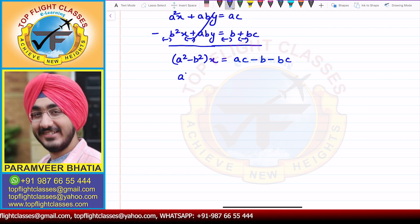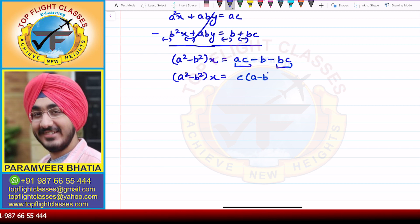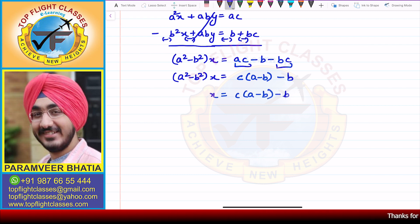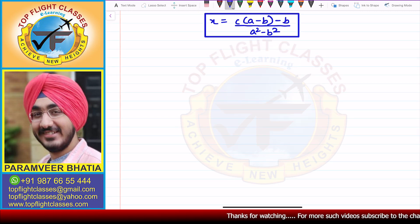So from here I get (a-squared minus b-squared)·x. On the right-hand side, I take c common out, so I get c times (a minus b) minus b. Therefore x is equal to [c times (a minus b) minus b] divided by (a-squared minus b-squared).